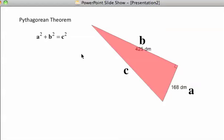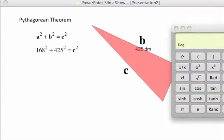So a squared plus b squared equals c squared. And this is our a, which is 168, and our b is 425, and our c is unknown. That's why we have this equation. So 168 squared plus 425 squared is equal to c squared. So we just have to use our calculators at this point.